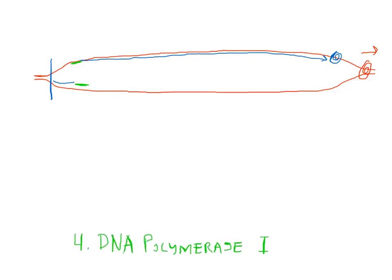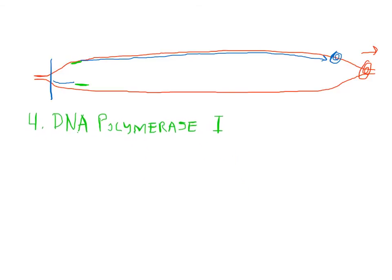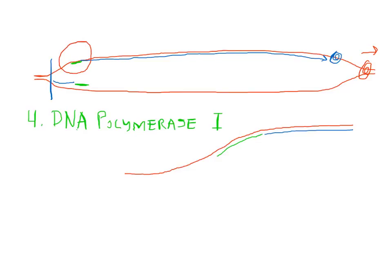Now we can talk about our fourth enzyme, called DNA polymerase 1. I think the reason they call it poly 1 is because this enzyme was discovered before DNA polymerase 3. To explain this, I'm going to draw a close-up view of this part right here.